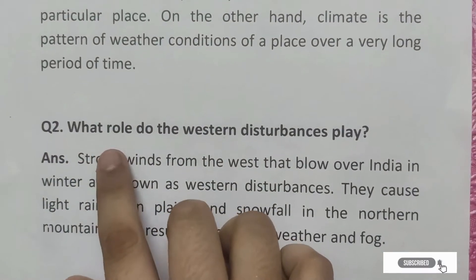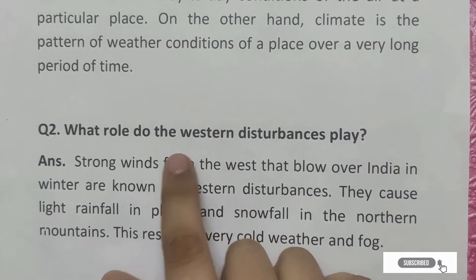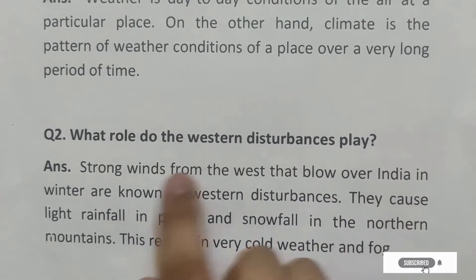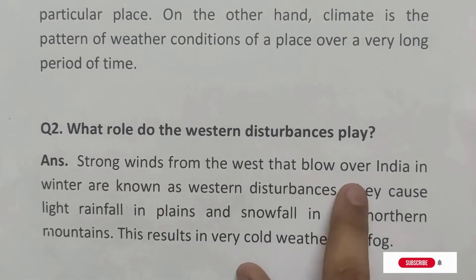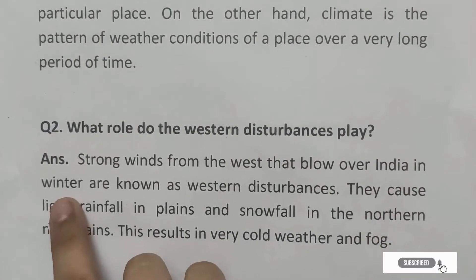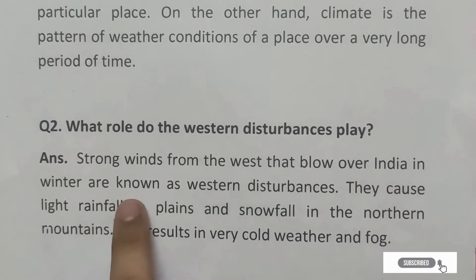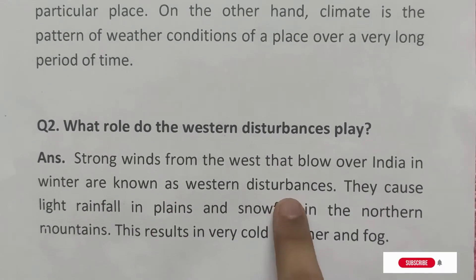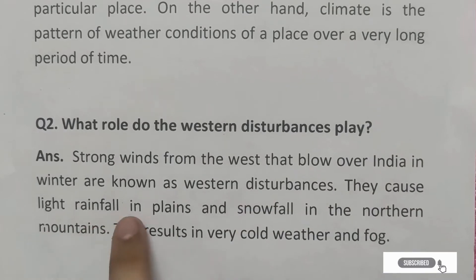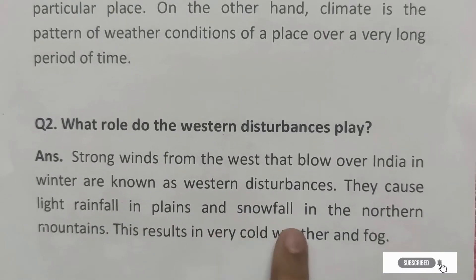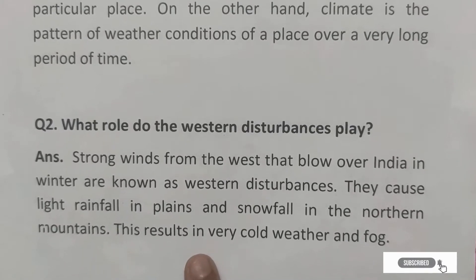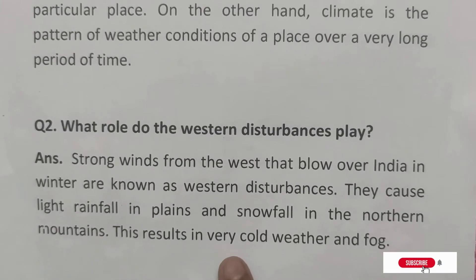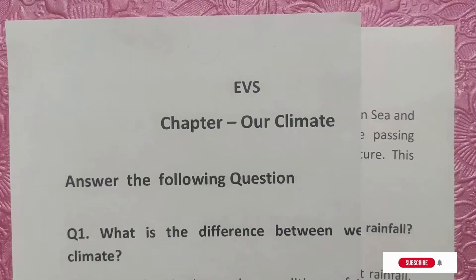Question number 2: What role do the western disturbances play? Answer: Strong winds from the west that blow over India in winter are known as western disturbances. They cause light rainfall in plains and snowfall in the northern mountains. This results in very cold weather and fog.